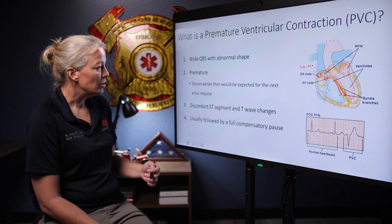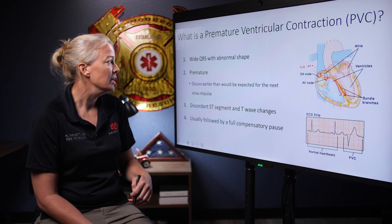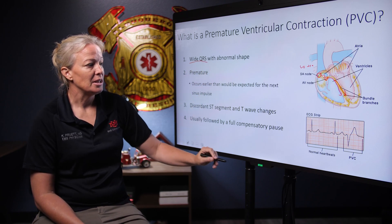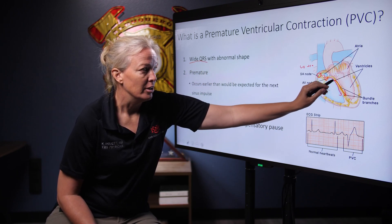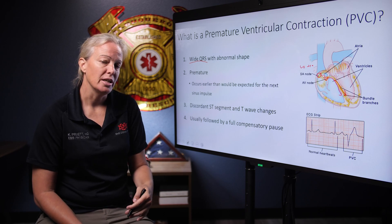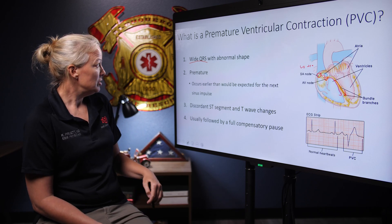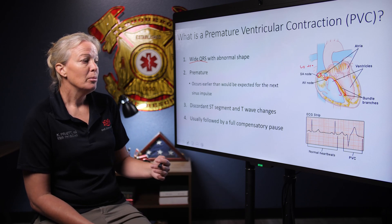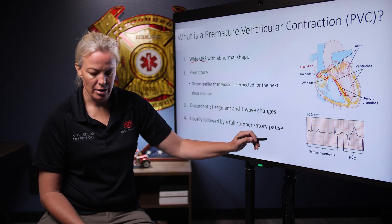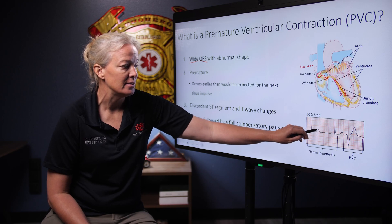So things that you can look for when you're trying to identify a PVC: it has a wide QRS. And that's because it's coming from the ventricle — usually any beat originating in the ventricles will be wide. It will also be premature. So if you look back at our previous 12-lead, you have a P wave QRS-T, P wave QRS-T.